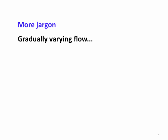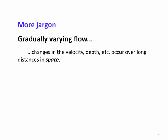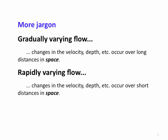A gradually varying flow is one where changes in velocity and depth occur over long distances in space. A rapidly varying flow, conversely, is where changes in velocity and depth occur over short distances in space. These terms can be confusing because we're used to thinking of 'rapid' and 'gradual' as referring to time, but here they refer to space — how the flow changes along the length of the channel.